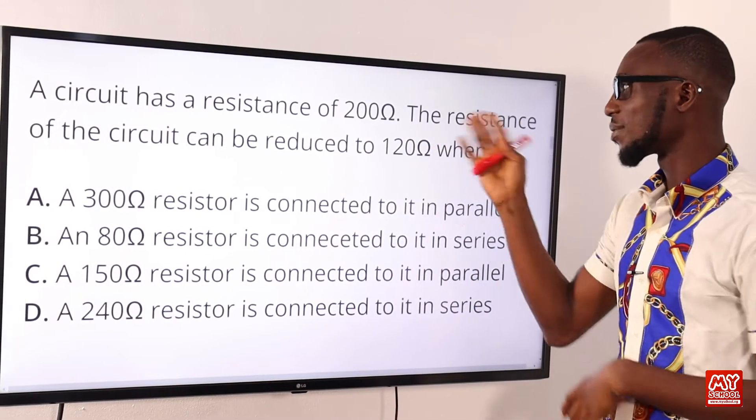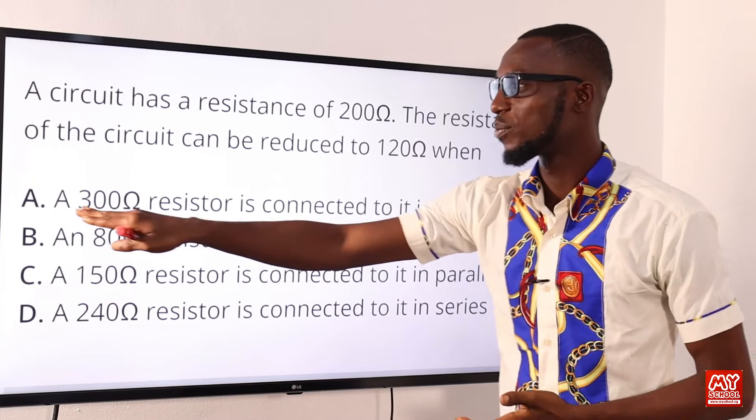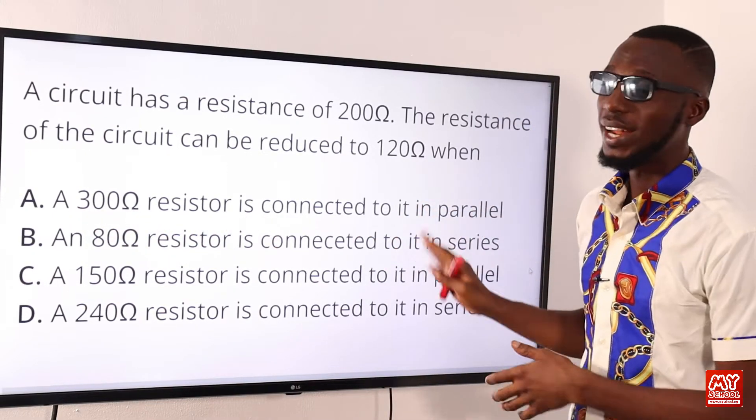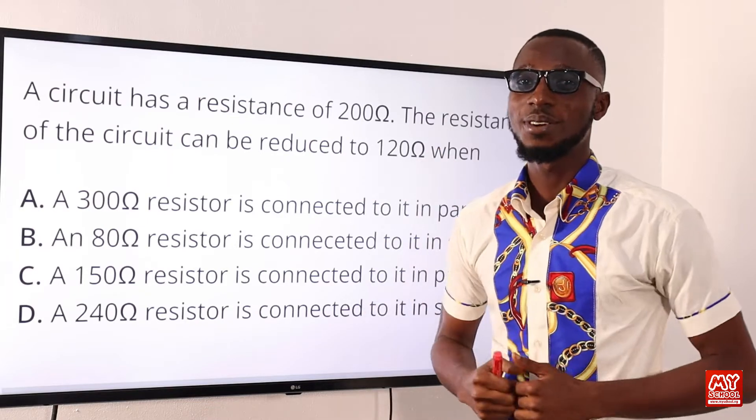Let's go back to the screen to sort out the correct option. So, we can confirm that option A is correct. A circuit has a resistance of this, it can be reduced to 120 when we add 300 ohms resistor in parallel connected to it. So, option A is your correct option.